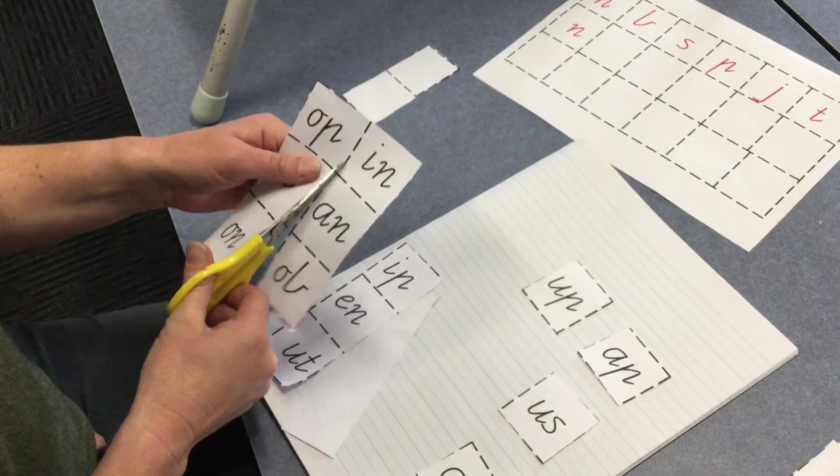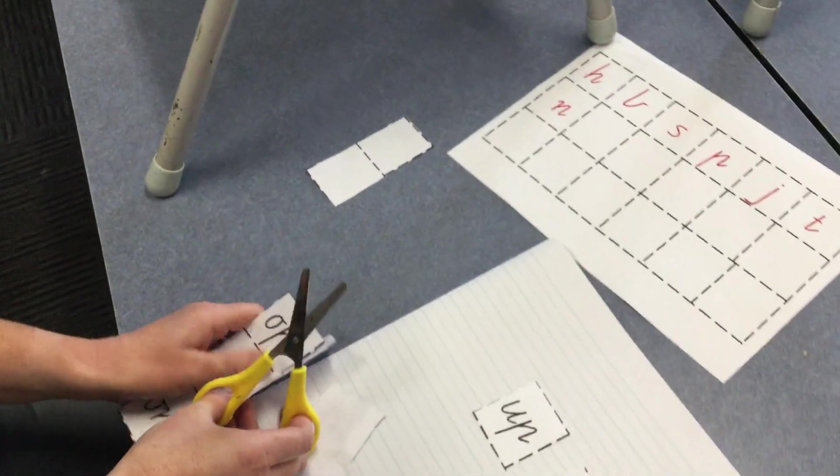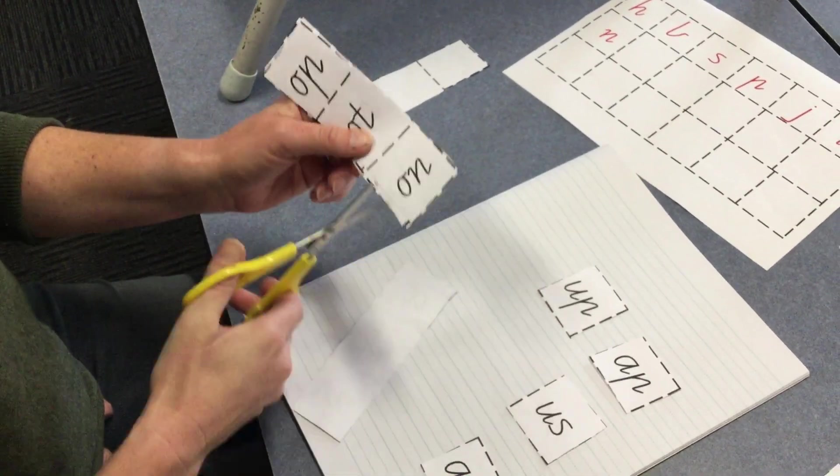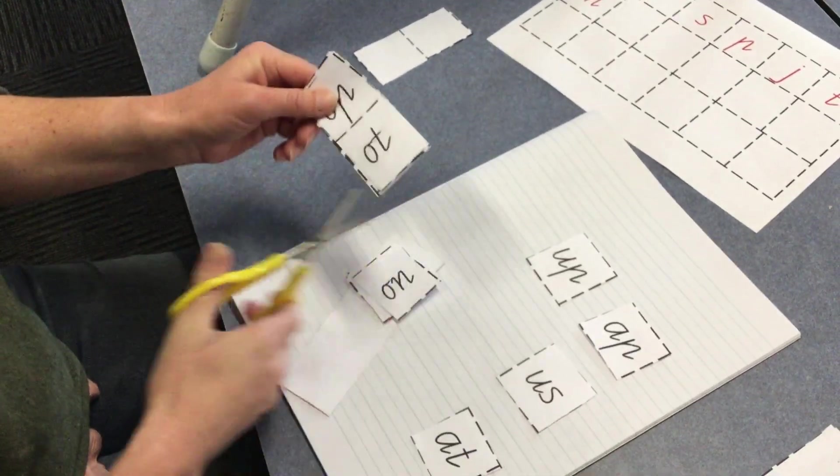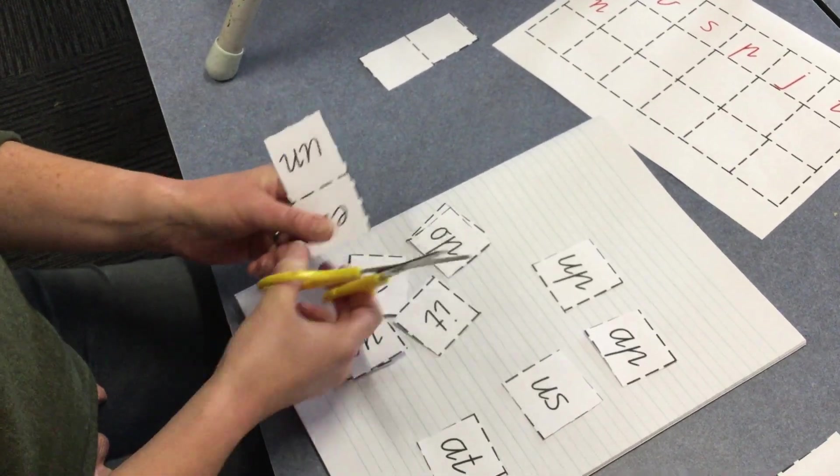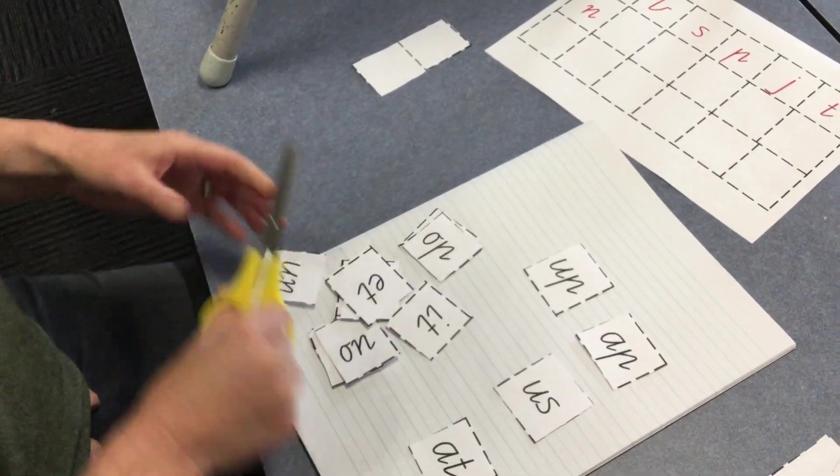I'm going to cut these up nice and quick. I'm going to show you a little cheat's way to do this: put them together and snippety snip. After we've done that, we can start to practice.